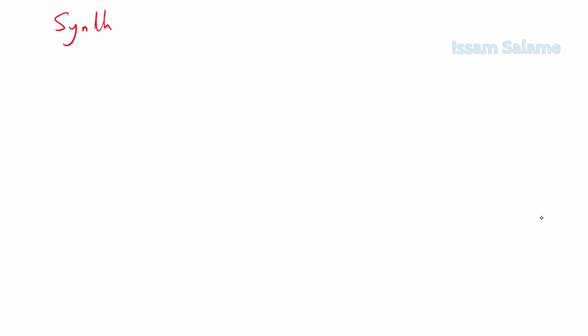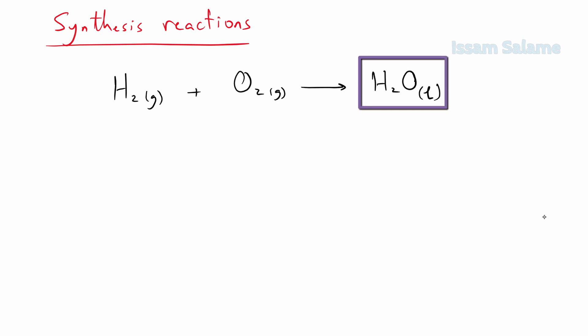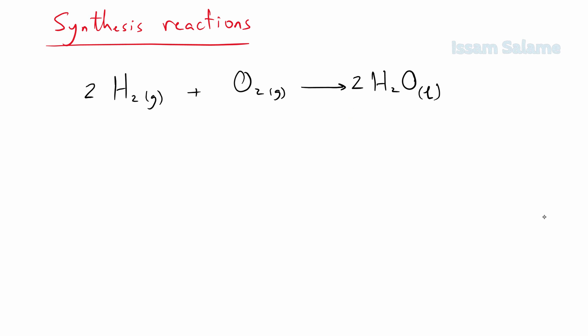I will start with synthesis reactions. Synthesis reactions have only one product regardless of the number of reactants. Here is an example: the reaction of hydrogen gas with oxygen gas to produce liquid water. Since we have only one product, this is a synthesis reaction. To balance, we multiply the water molecules by two and the hydrogen molecules by two.